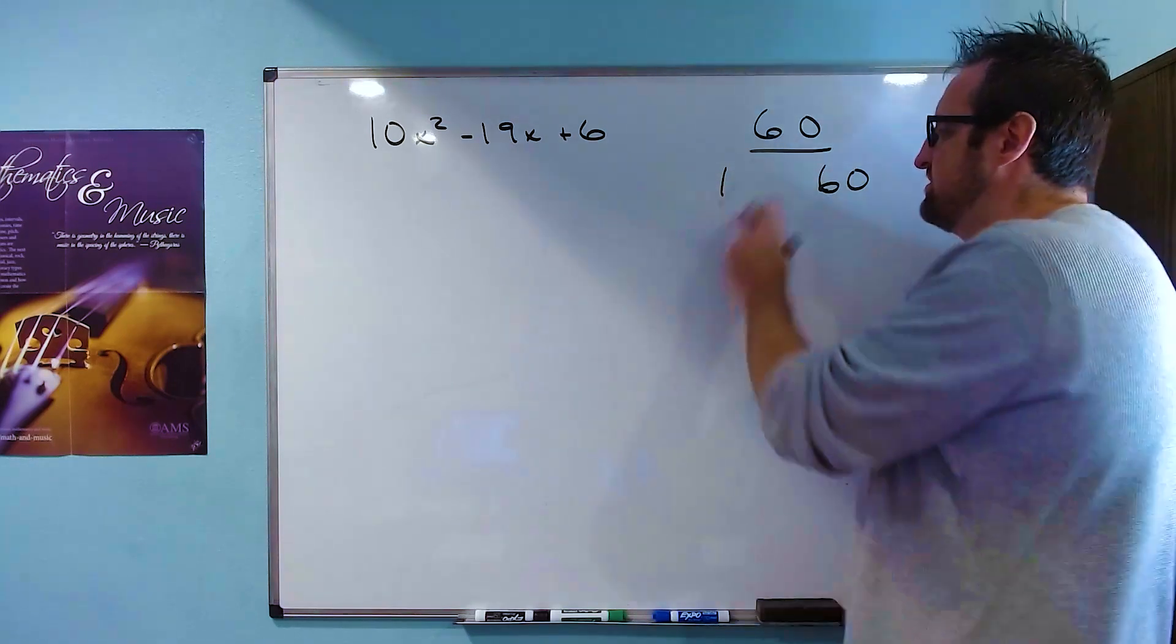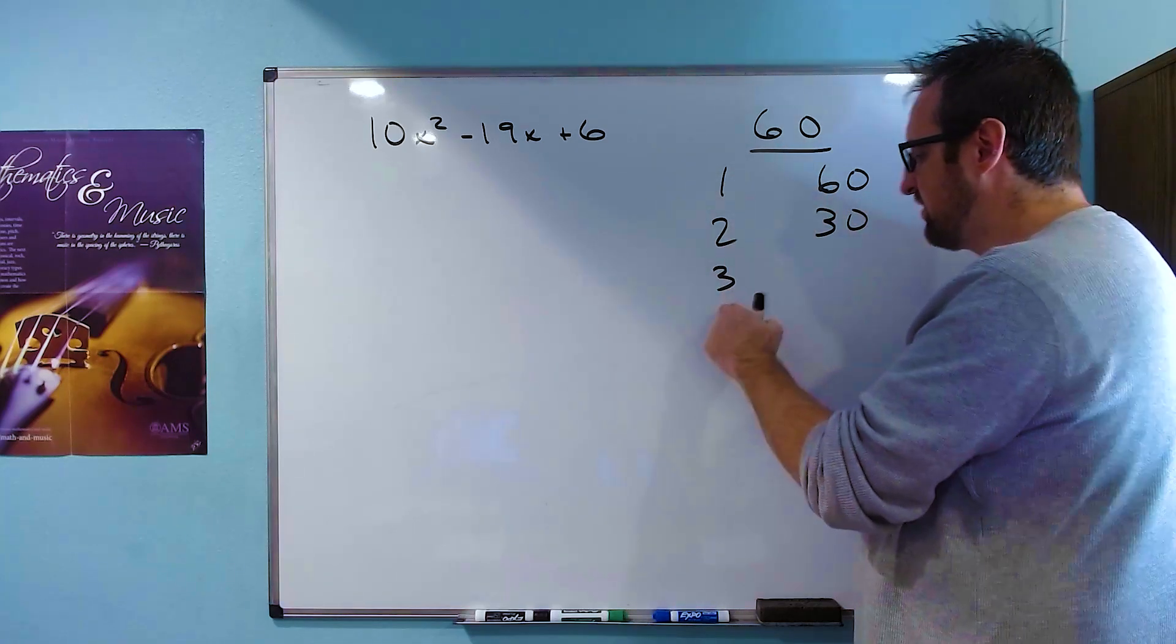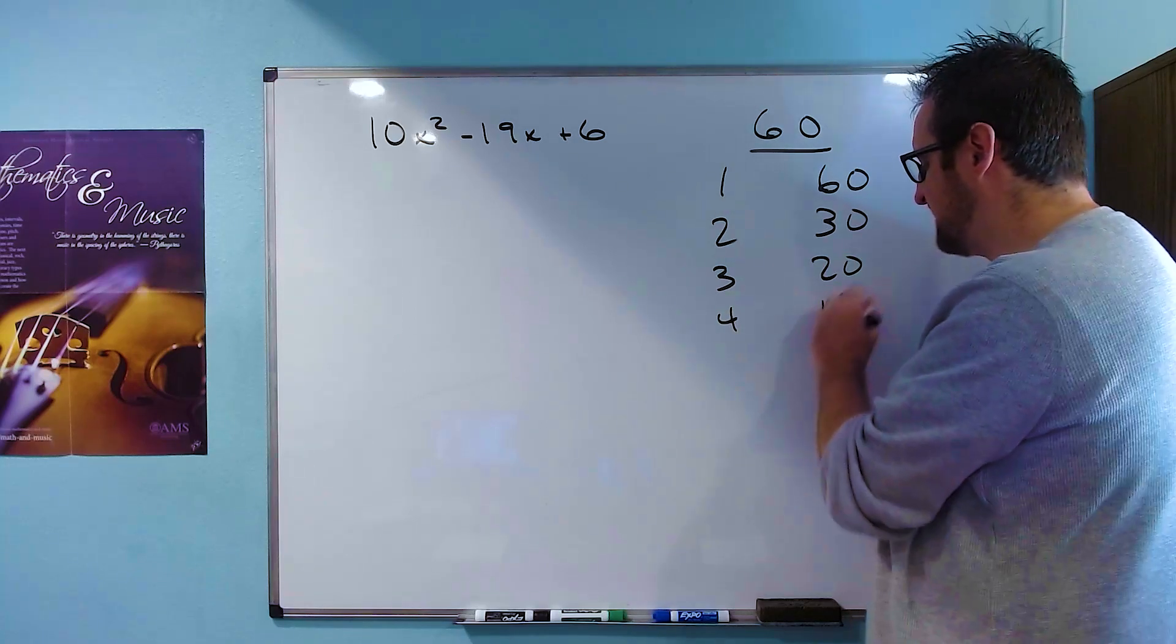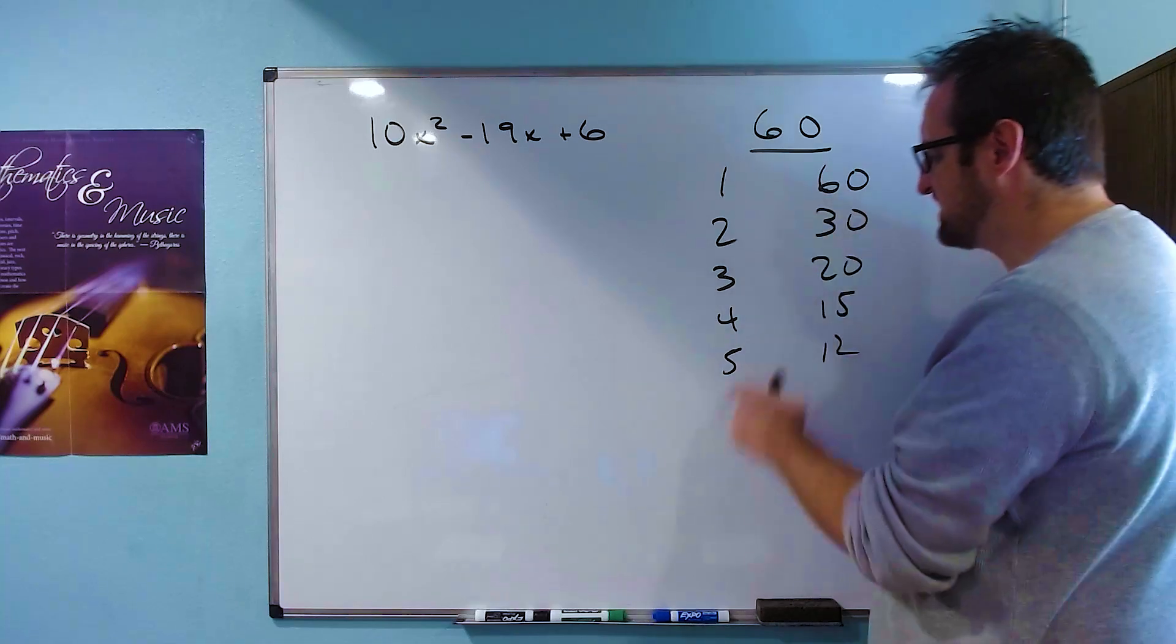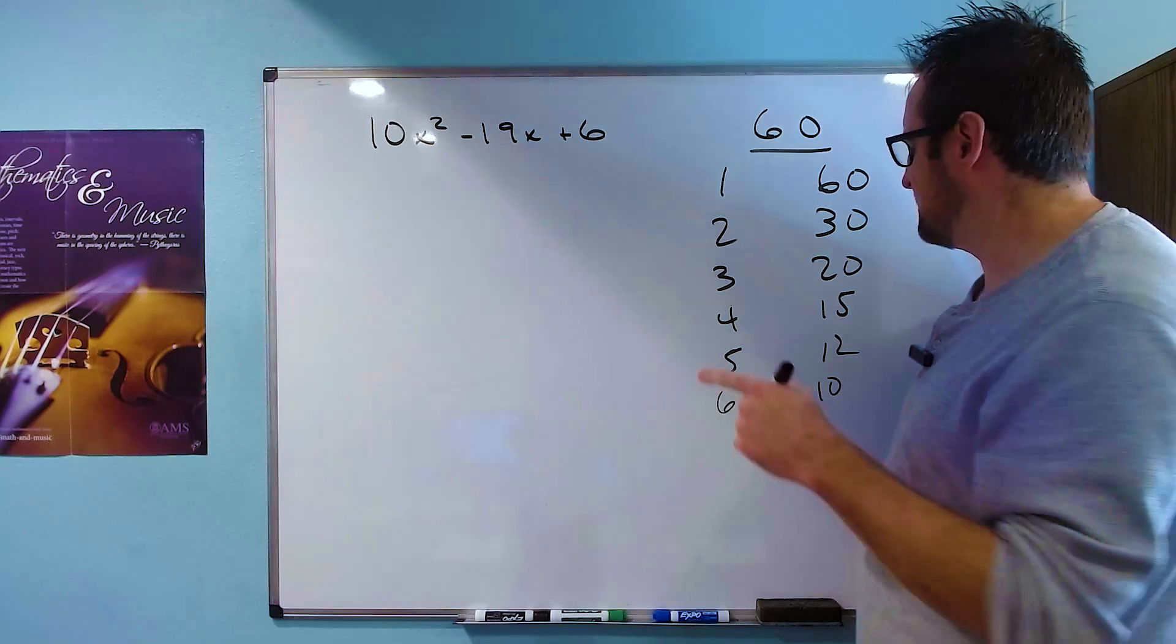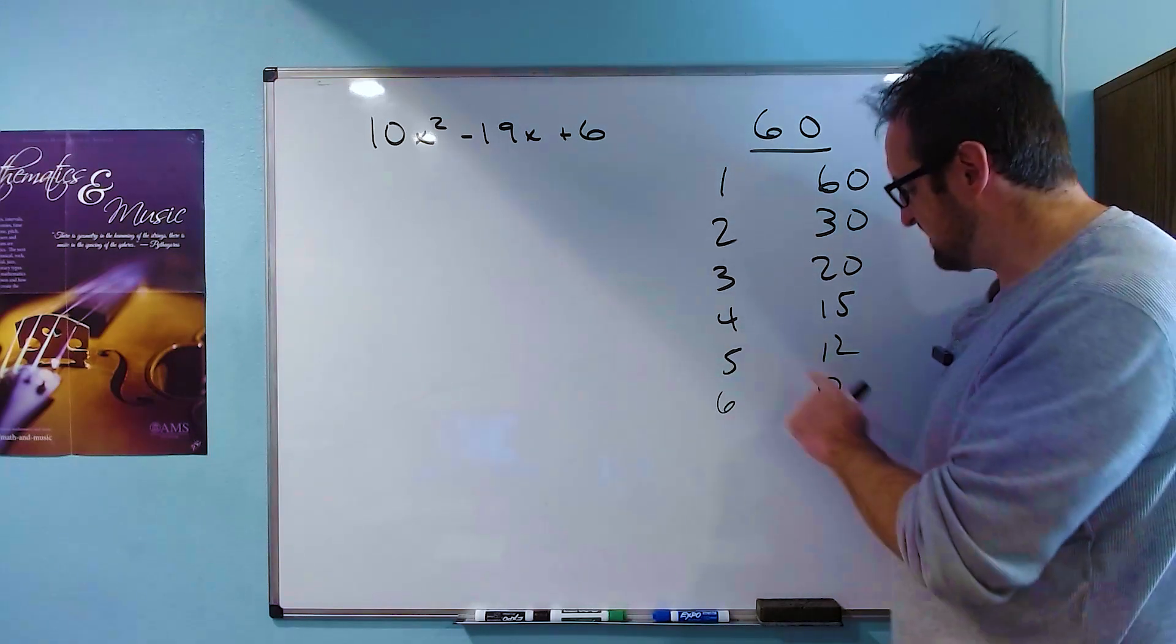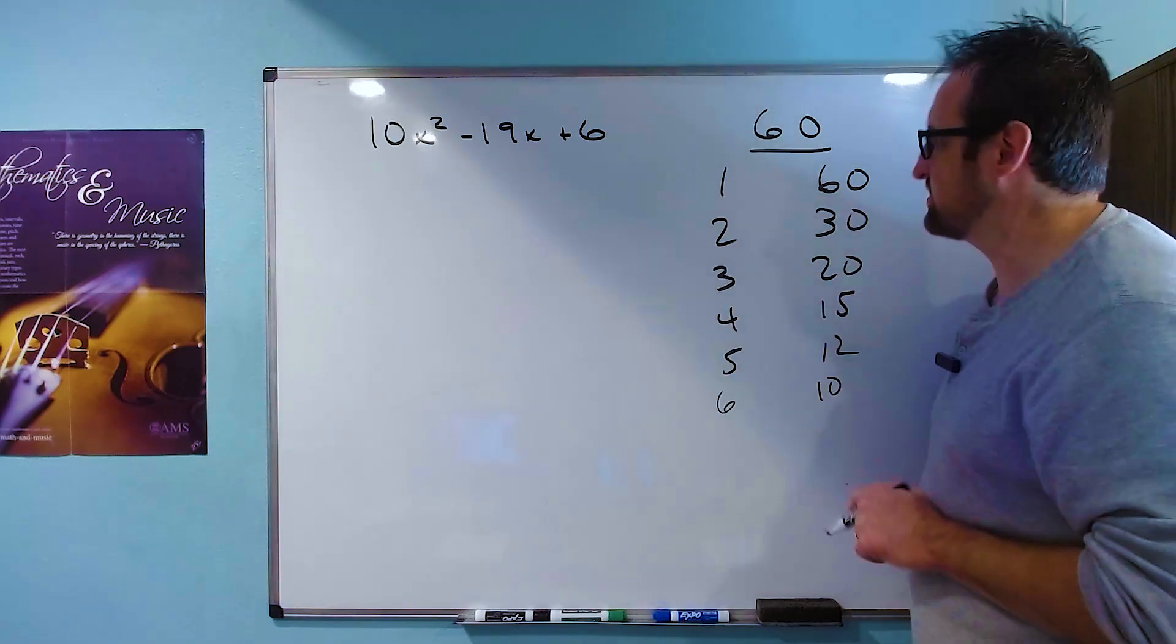As we've done before, 1 and 60 work. 2 also work, 60 divided by 2 gives 30. 60 divided by 3 gives 20. 60 divided by 4 gives 15. 60 divided by 5 works with 12. 60 divided by 6 works with 10. 60 divided by 7 doesn't work, 8 and 9 don't work. And then 10 is already listed. So we have the complete set of factors of 60.